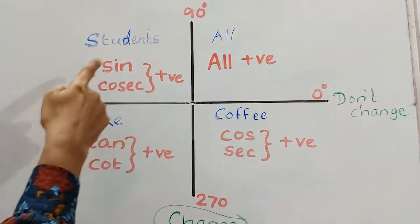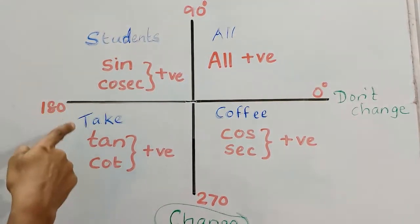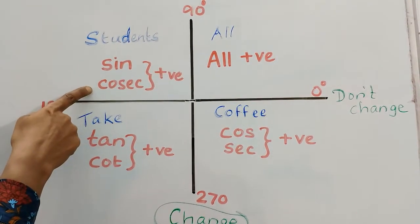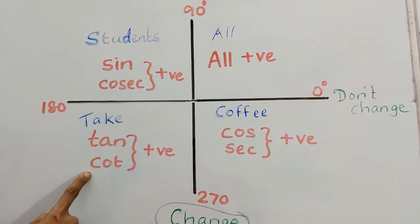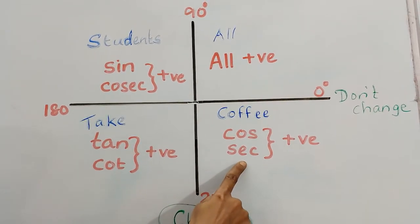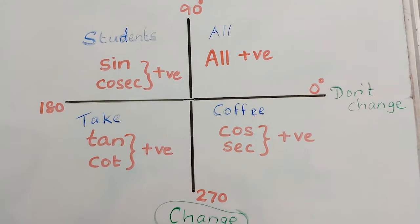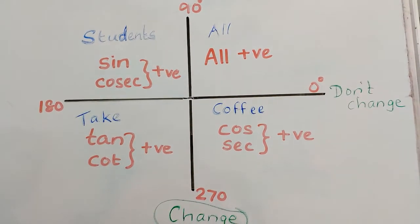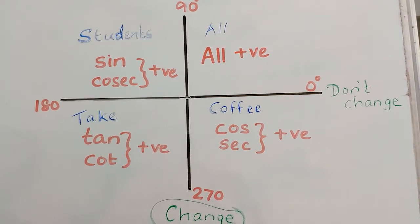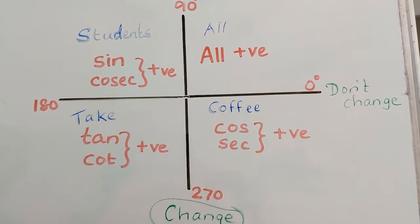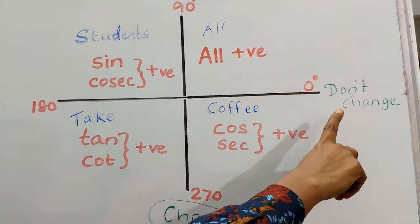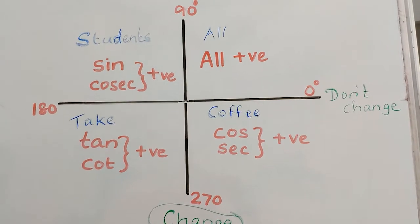First quadrant: all positive. Second quadrant: all students take coffee — sine and cosec are positive. Tan and cot are positive in the third quadrant. Cos and sec are positive in the fourth quadrant. We have to change the trigonometric ratios at odd multiples of 90: sin to cos, cos to sin, tan to cot, cot to tan, sec to cosec, cosec to sec. At even multiples of 90, don't change the trigonometric ratios.